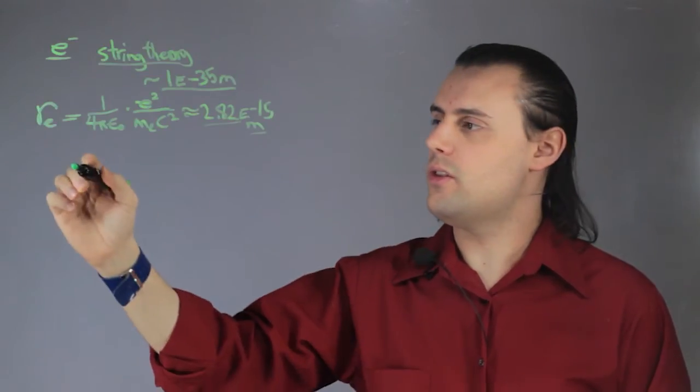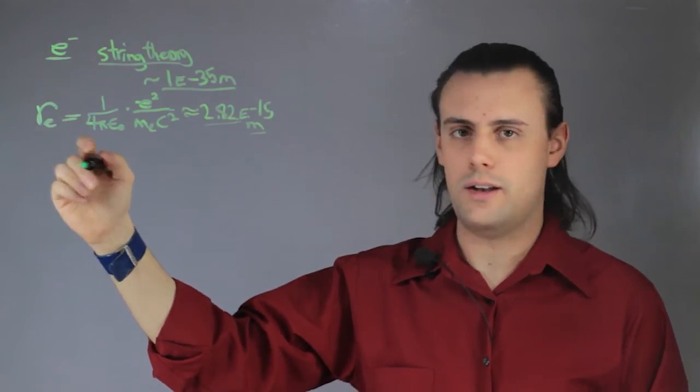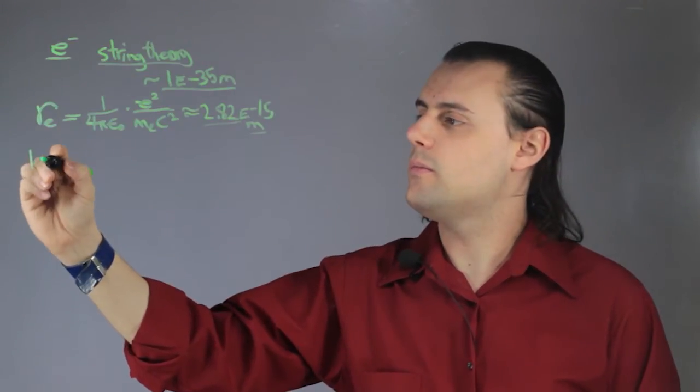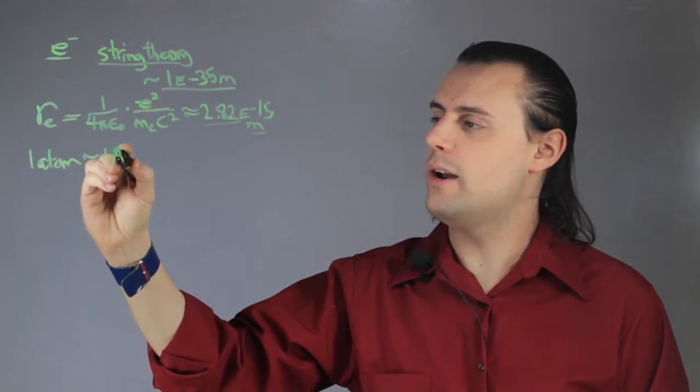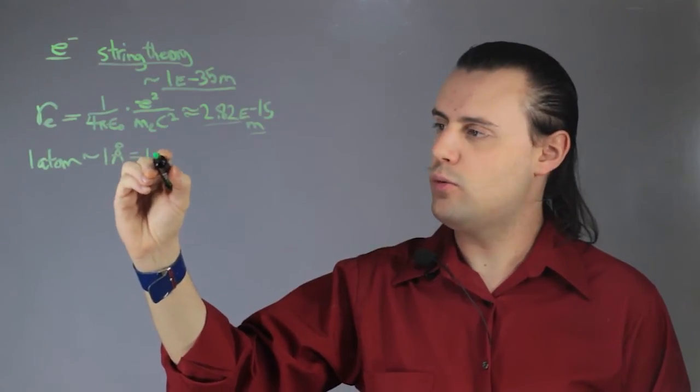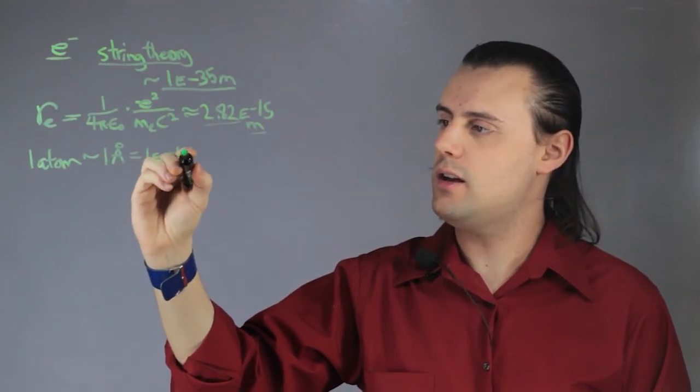Now we just need to know the approximate sizes of an atom and a chromosome. So one atom has a size on the order of one angstrom, which is equal to 1 times 10 to the negative 10 meters.